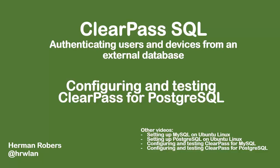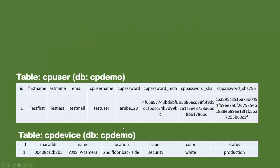In that previous video on setting up Postgres, we created a database called cpdemo with two tables. The first is cpuser and the second is cpdevice. The cpuser table has a user with the username testuser and password aruba123. Because some databases don't store plaintext passwords, we stored the password in MD5, SHA, and SHA256 as well. The cpdevice table contains a MAC address of an IP camera with location, labeling, color, and status information.